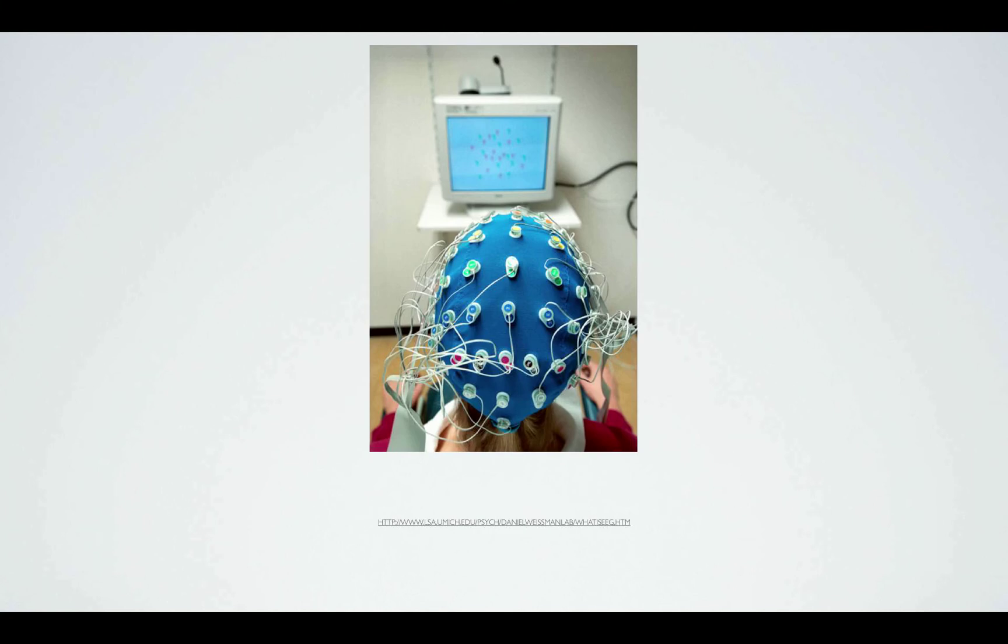EEG is a technique used to measure voltage fluctuation in the brain by applying electrodes to the scalp in carefully mapped out positions. They can also be placed directly on or into the brain to assist surgical treatment of neurological conditions.